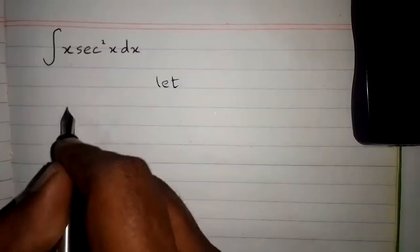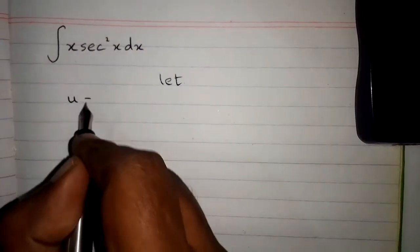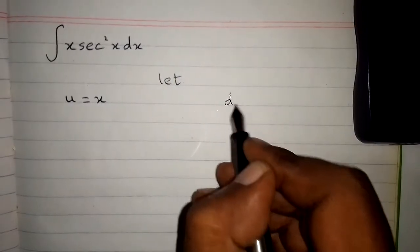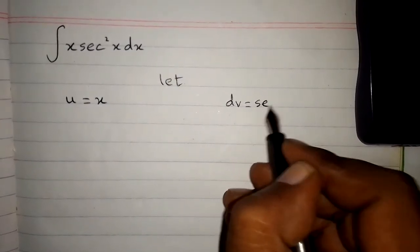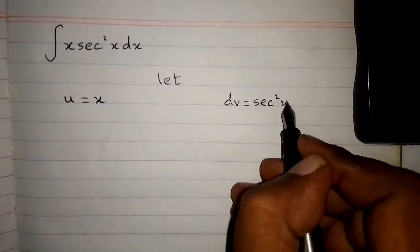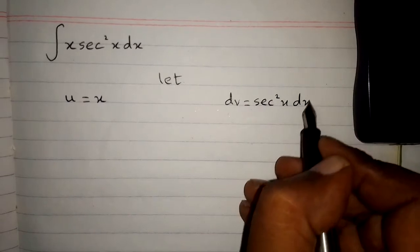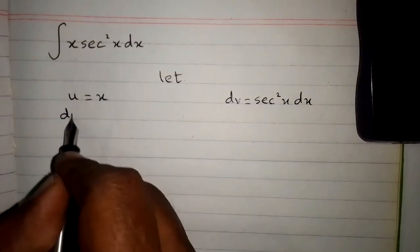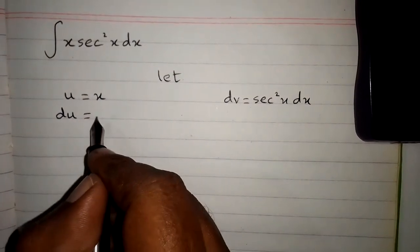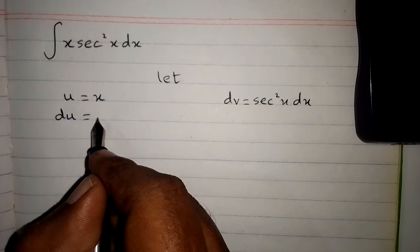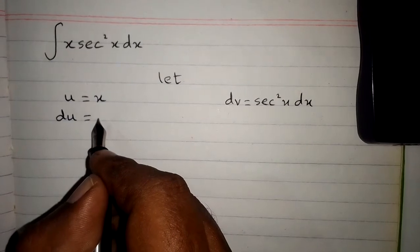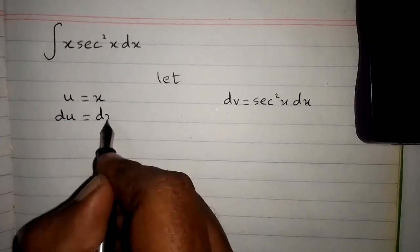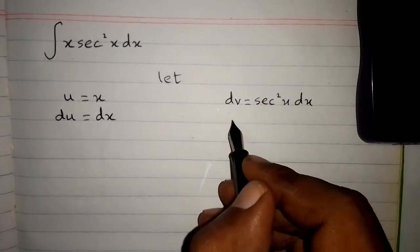First of all, let u equal x and dv equal sec squared x dx. The differential du is equal to the derivative of x, which is 1, times dx. So du is equal to dx.